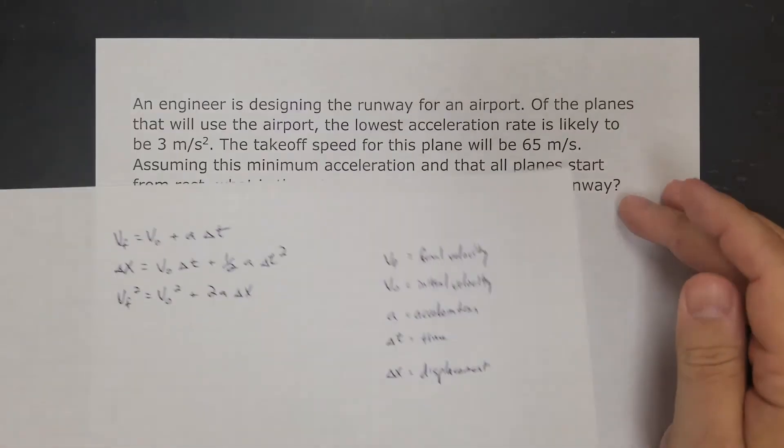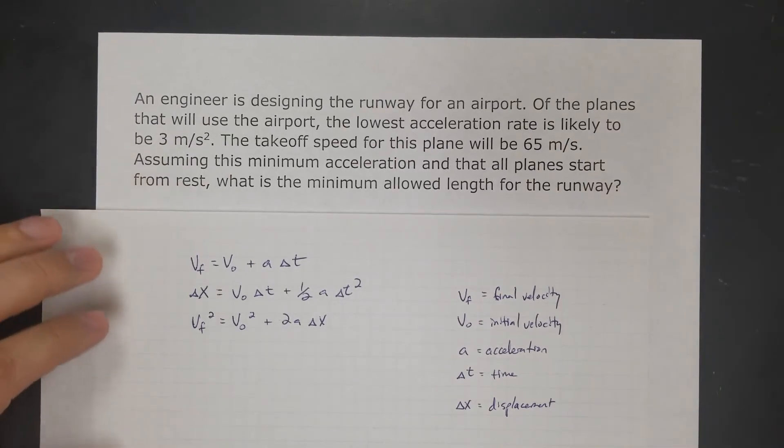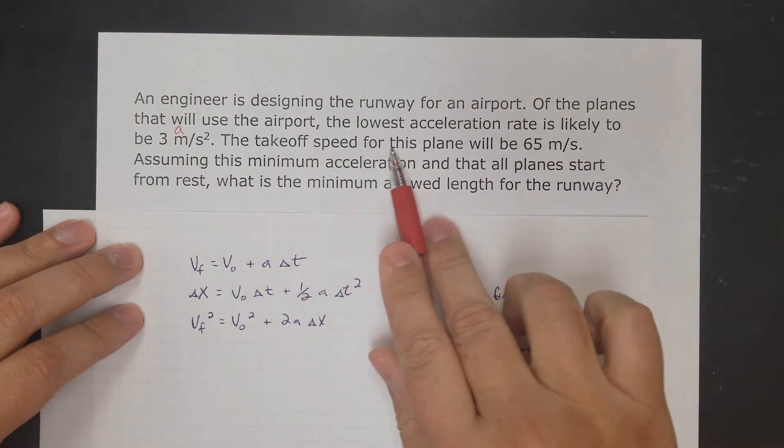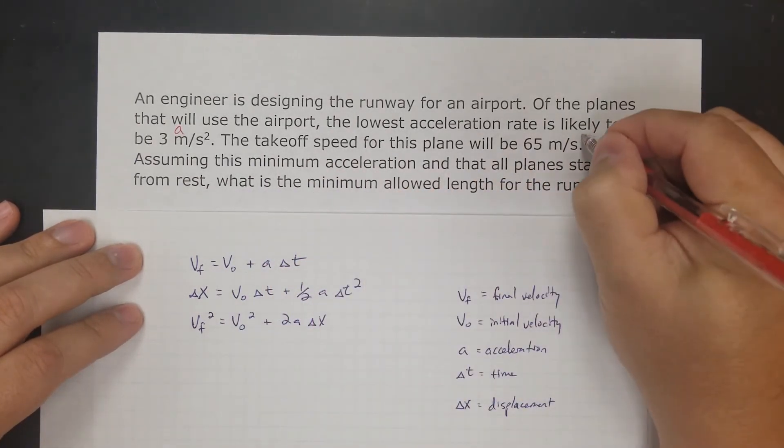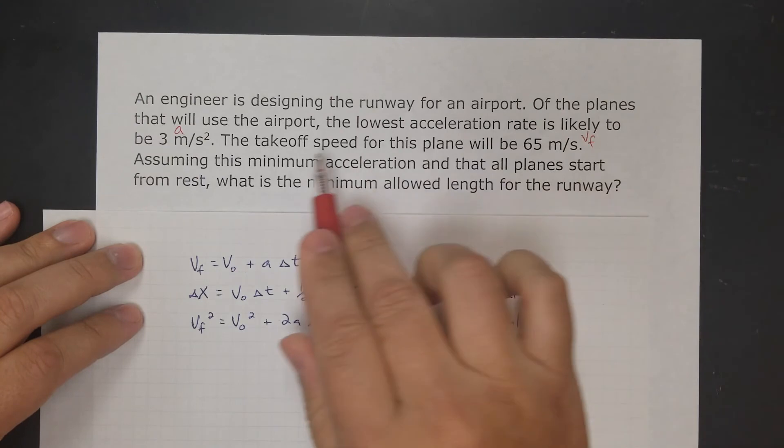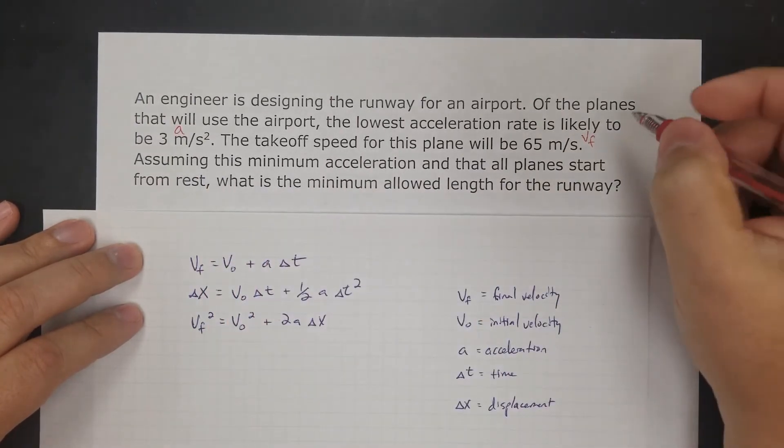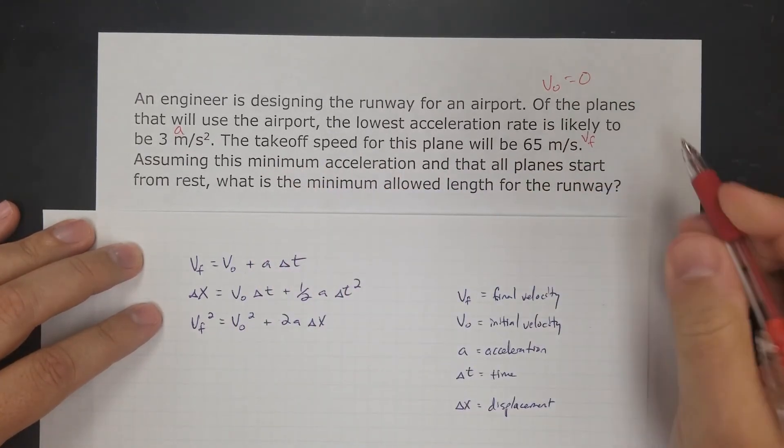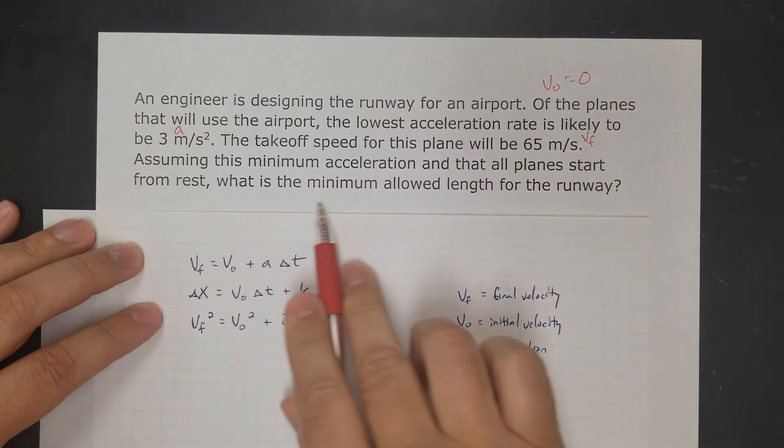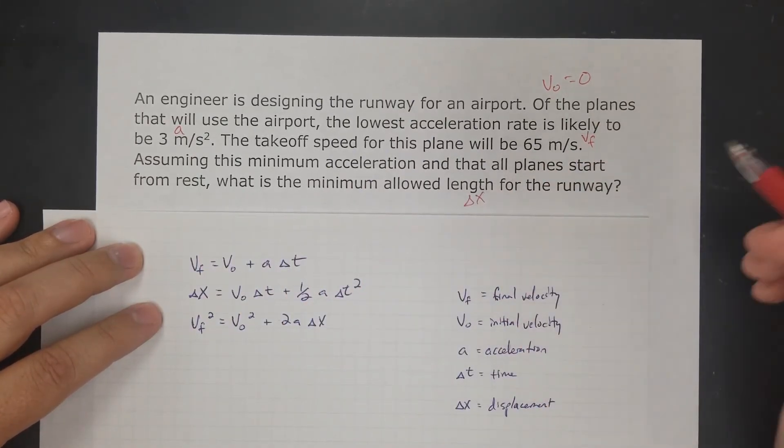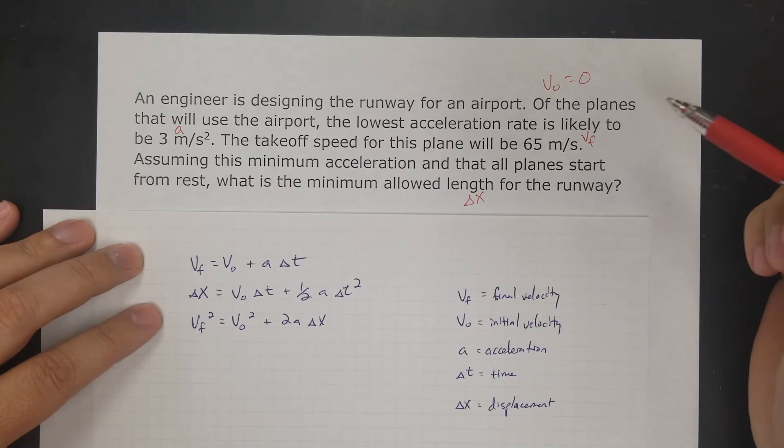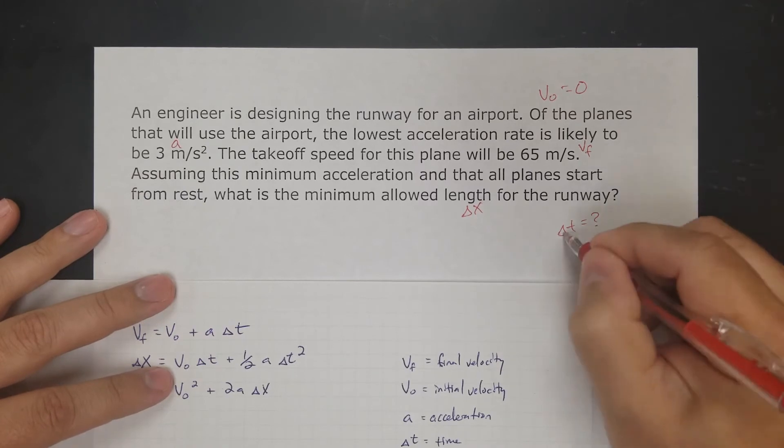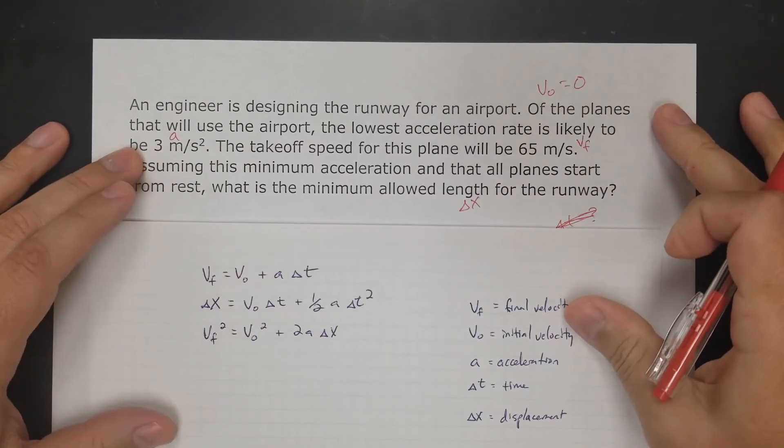Last question: An engineer is designing a runway for an airport. Of the planes that are going to use the airport, the lowest acceleration rate is going to be 3 meters per second squared. Takeoff speed for the plane will be final velocity, 65 meters per second. It doesn't say, but I'm going to assume that it starts from rest because it's taking off from a runway. So initial velocity is zero. What's the minimum length for the runway? I'm solving for displacement again. Except this time, I don't know what delta t is. I need something that doesn't have delta t.